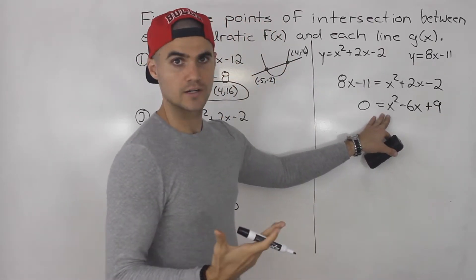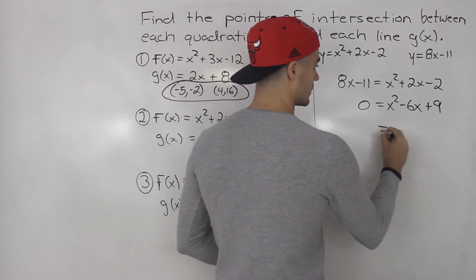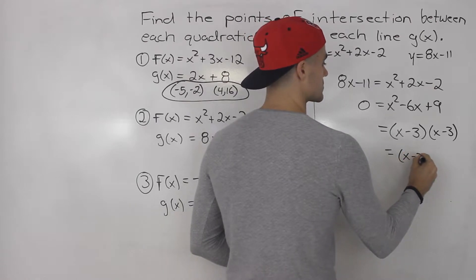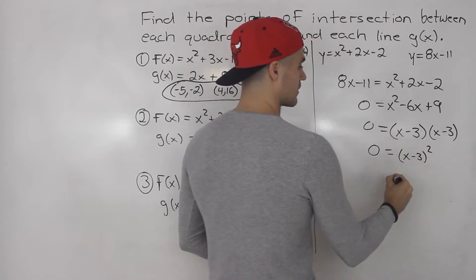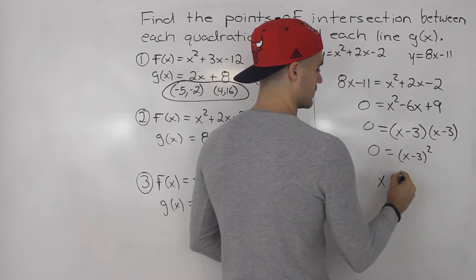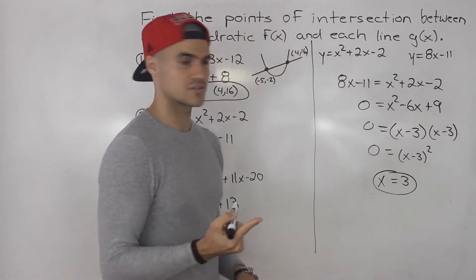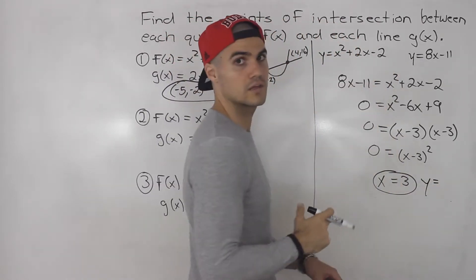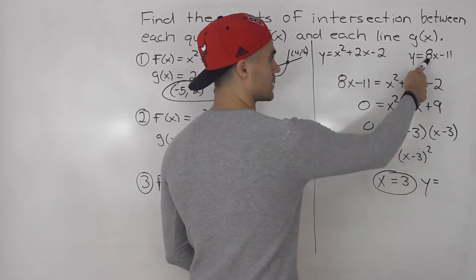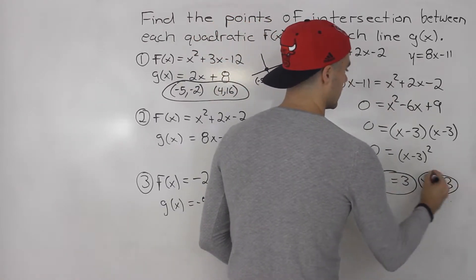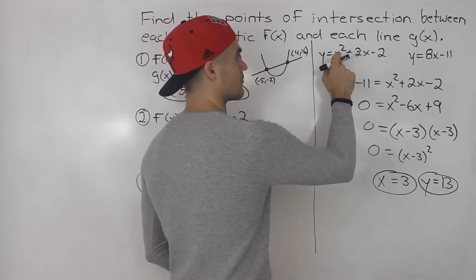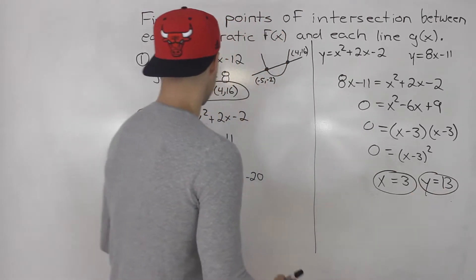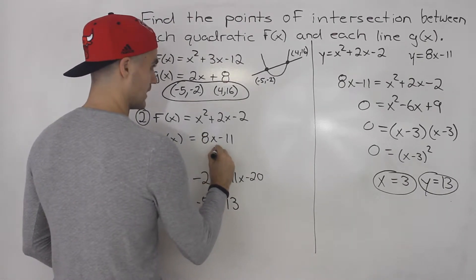This is a quadratic equation — it factors smoothly into x minus 3 times x minus 3, which is a perfect square trinomial: x minus 3 squared. So there is only one solution: x equals 3. There's only one point of intersection. Plugging 3 into the line: 8 times 3 is 24, minus 11 gives us 13. Plugging 3 into the quadratic: 9 plus 6 is 15, minus 2 gives us 13 as well. The one point of intersection is at 3, 13.